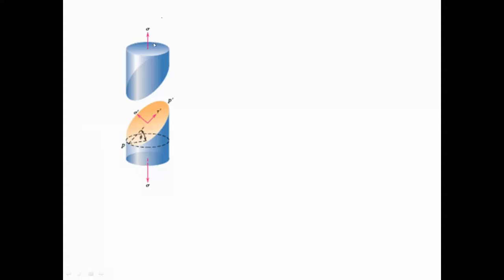When a normal stress is applied to a specimen, we can easily find the normal stress on the cross-sectional area. But the main idea is: what if we are interested in the value of stresses — normal and shear — along a plane which has an angle of theta with this cross-sectional area? The equations define normal stress and shear stress along that plane, where sigma is the far-field stress in the longitudinal direction and theta is the inclination angle.